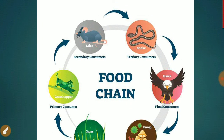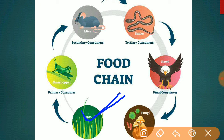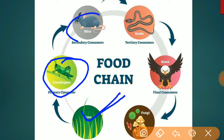An example of a food chain: grass is consumed by the grasshopper (primary consumer), then consumed by mice (secondary consumer), then the mice are eaten by a snake (tertiary consumer), and finally the snake is eaten by the top consumer.